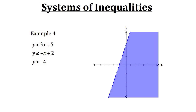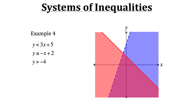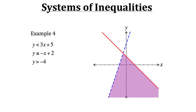Now let's do our second inequality: y is less than or equal to negative x plus 2. We'll draw the line where y equals negative x plus 2, and this time we make it solid because the solution can lie on the line itself, indicated by the equal sign in the inequality. Since y is less than or equal to the expression, we shade the region below the line. So far, our solution is going to be somewhere within the purple region where the first two inequalities overlap.